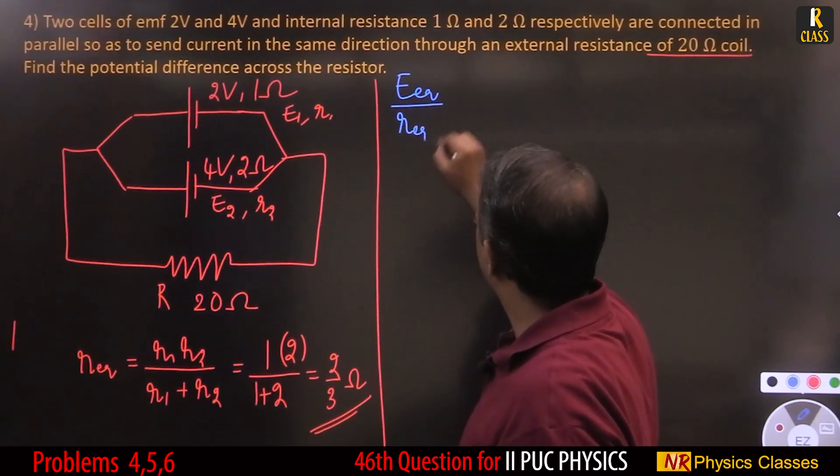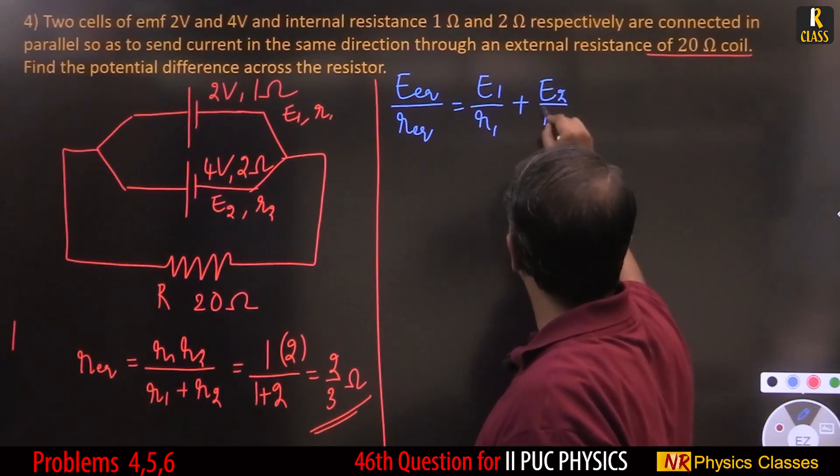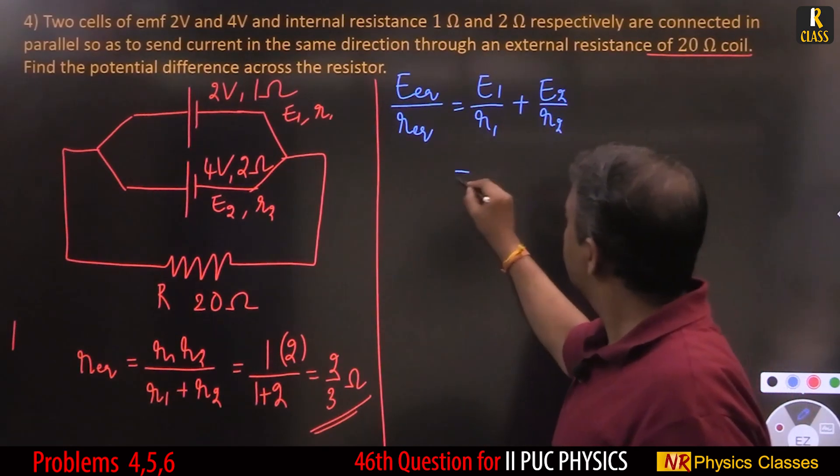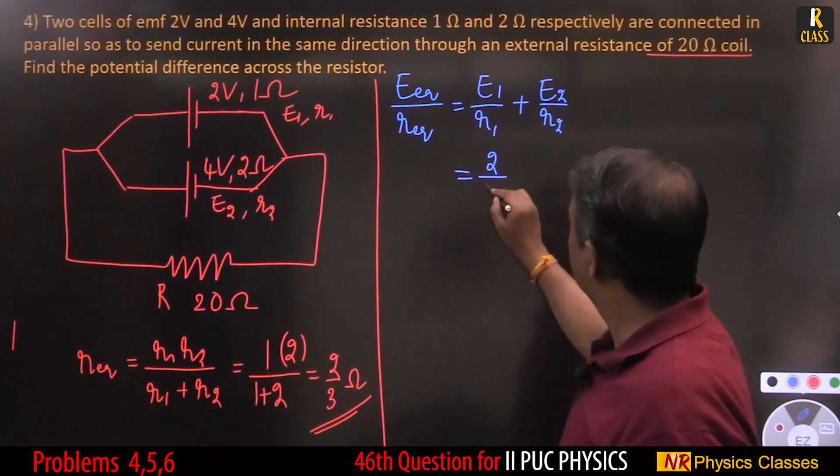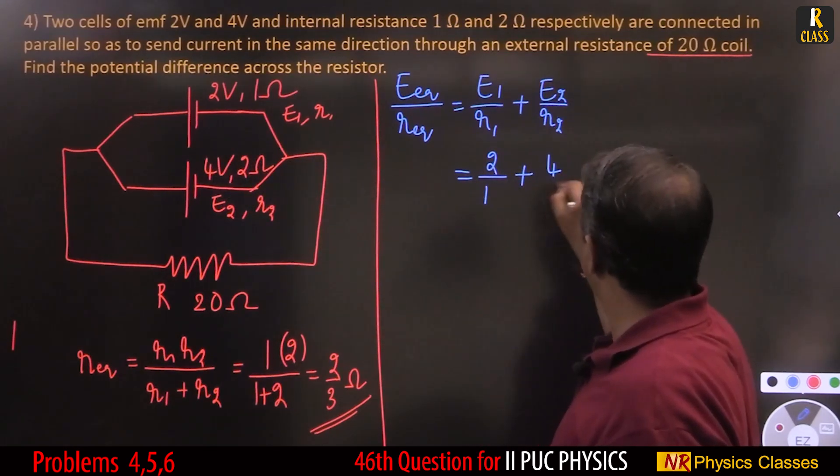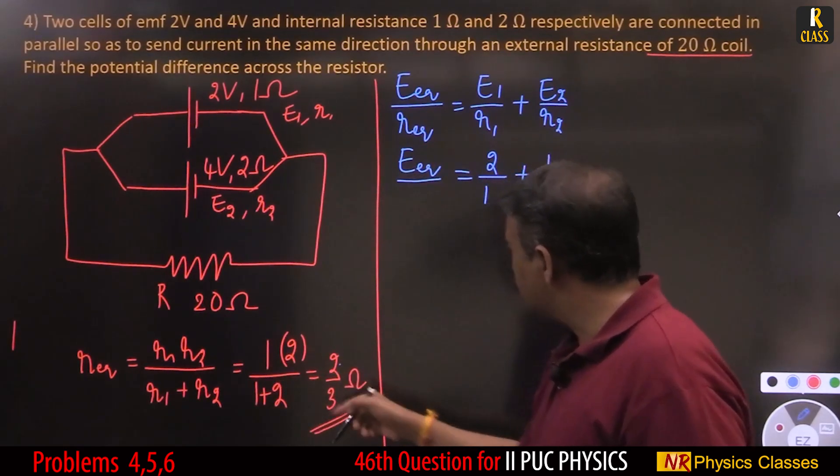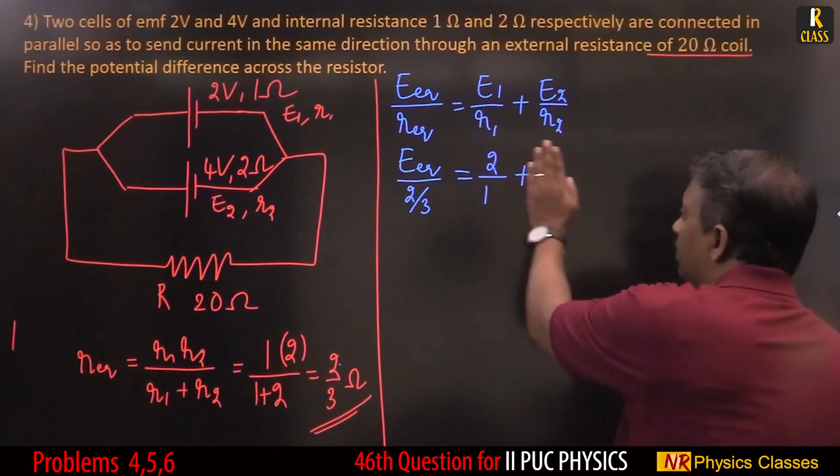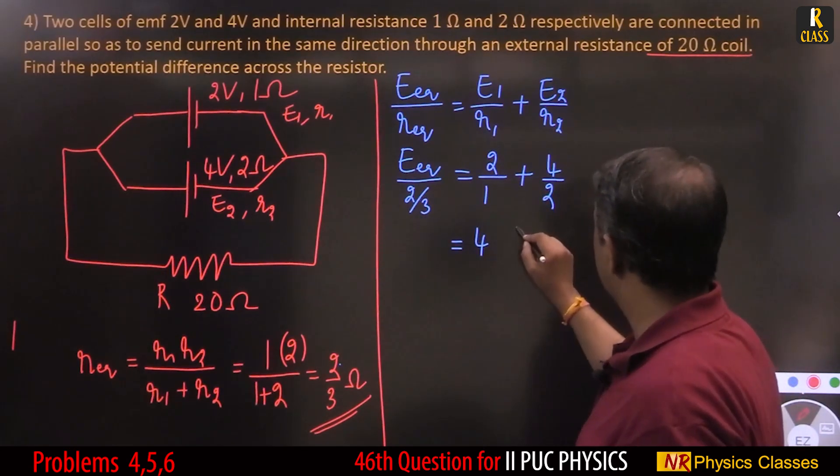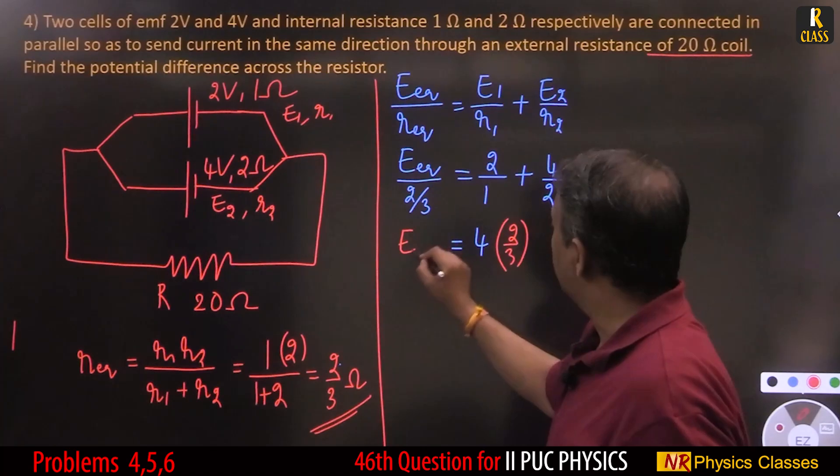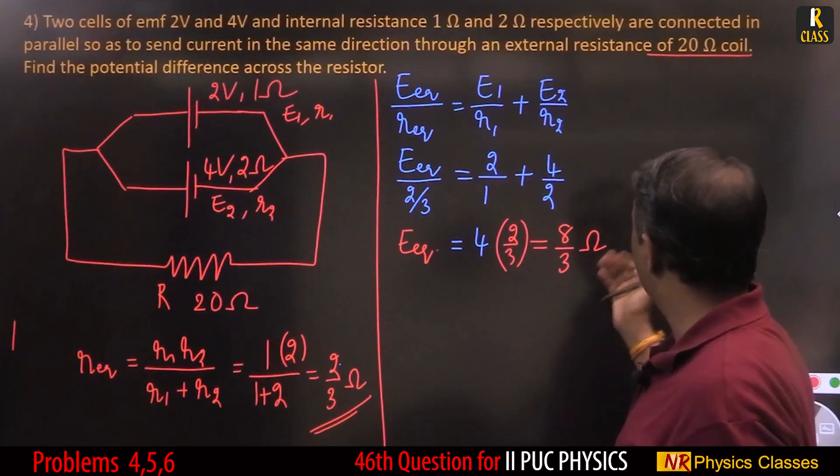EMF equivalent by R equivalent equals E1 by R1 plus E2 by R2. E1 is 2 by 1 plus E2 is 4 by 2. This is E equivalent by R equivalent which is 2 by 3. So 2 plus 2 equals 4, and 4 times 2 by 3 gives E equivalent equals 8 by 3 volt.